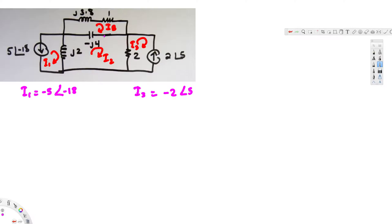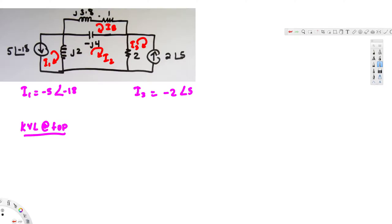We have two unknown mesh currents to solve, so we need to create two equations. Let's apply KVL for the top part. In phasor analysis, inductances and capacitances are all treated as impedances, and impedances in series can be added together just like resistances.